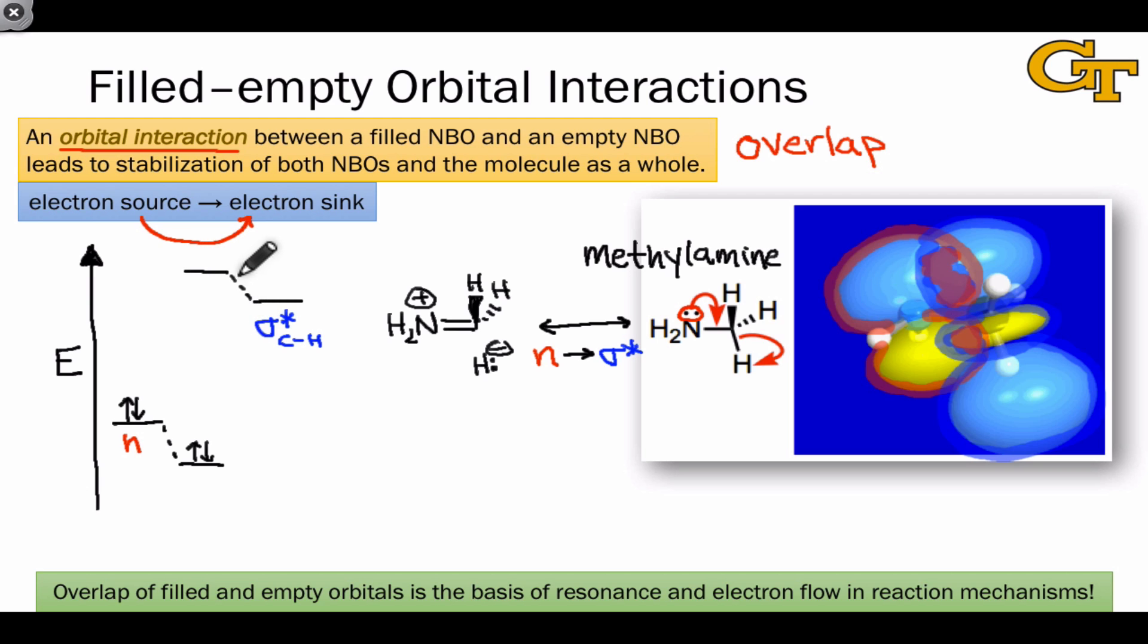Notice that this too corresponds to a stabilizing effect. The bonding combination corresponds to constructive overlap of the non-bonding lone pair orbital and the sigma star orbital, and the antibonding orbital corresponds to destructive overlap, or a subtractive combination between the non-bonding and sigma star orbitals.